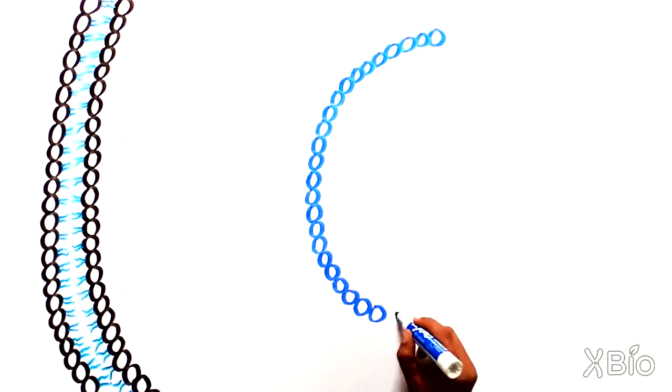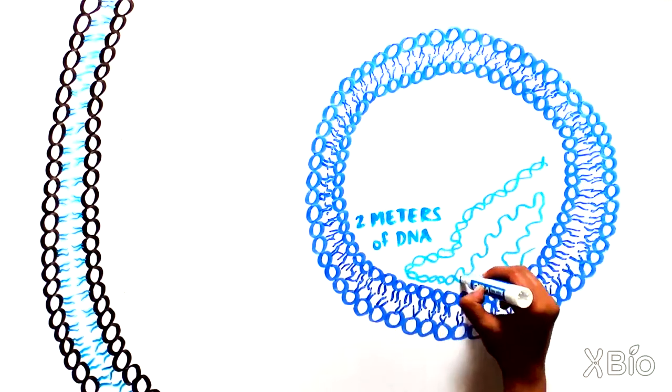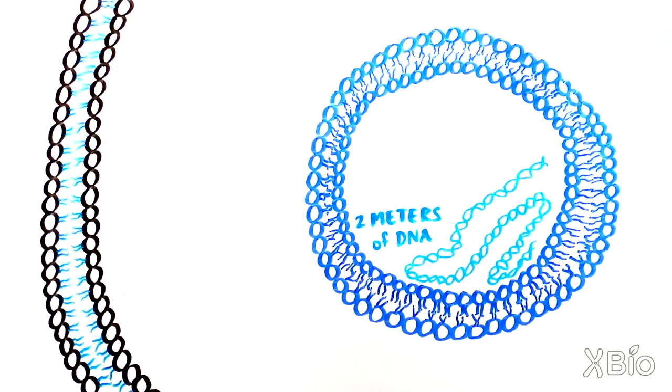Crammed inside of the nucleus of every single cell is 2 meters of DNA, fibers that contain all of the information necessary for making new proteins and for cell replication. The nucleus, like the plasma membrane and many other organelles, is surrounded by a lipid membrane.